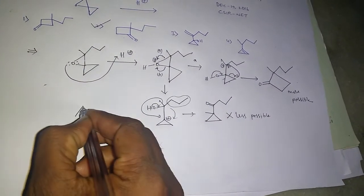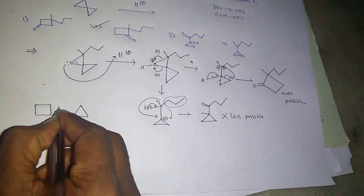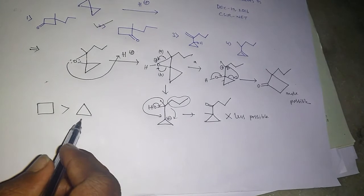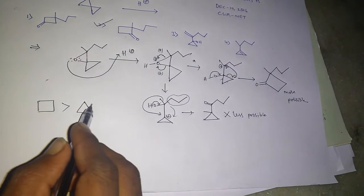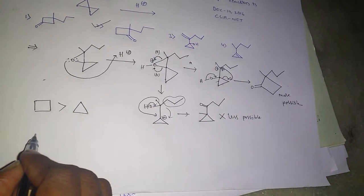If you observe the bond in cyclopropane, it is like this. In cyclopropane, this is more strained cyclic structure when you can consider with cyclobutane.